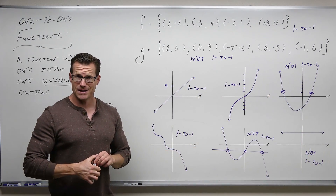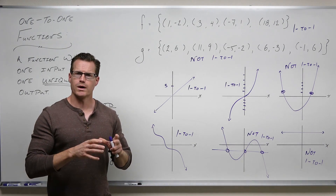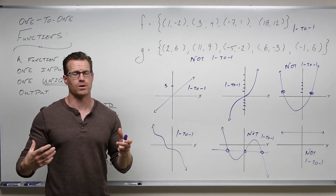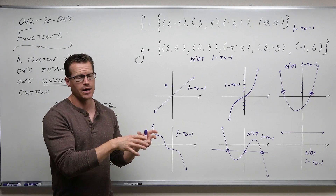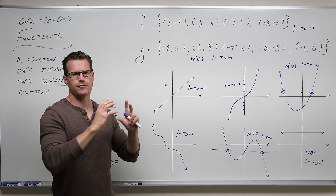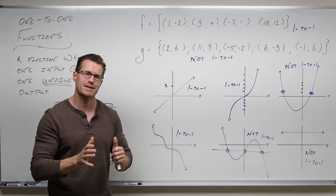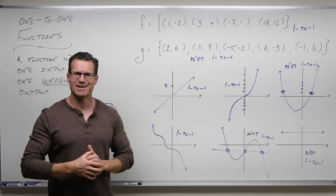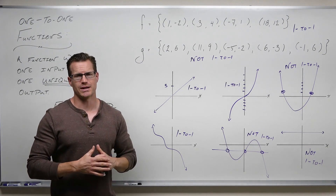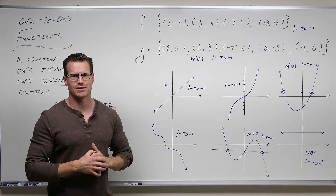So why did we learn this? We learned it because only one-to-one functions have inverses, and every inverse comes from a one-to-one function. If a function is one-to-one, it has an inverse; if a function has an inverse, it's also one-to-one. We needed this to determine that functions have inverses, and then we're going to find them in the next video. Hopefully you now understand when a function is one-to-one and when it's not. We'll talk about some algebraic looks of functions a little bit later. Have a good day.